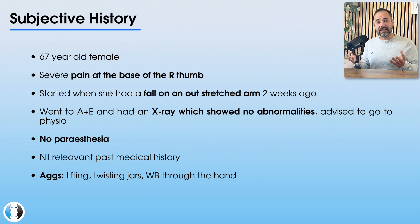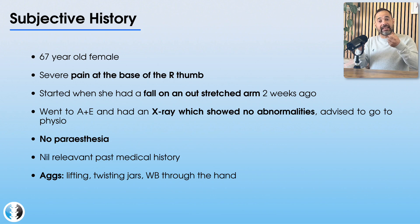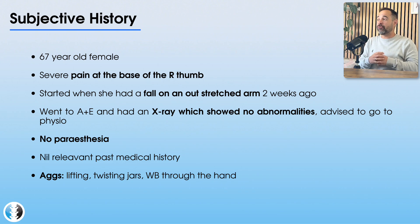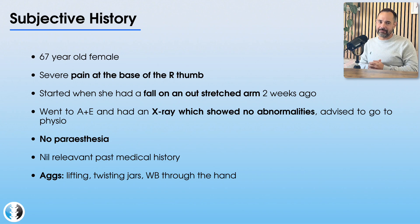She has no pins and needles or numbness, and no significant past medical history. Some of her aggravating factors include lifting things up, twisting jars — in particular, taking the lid off a jar — and also weight-bearing through the hand. If she's trying to push herself up from a chair, something like that, it aggravates her symptoms.